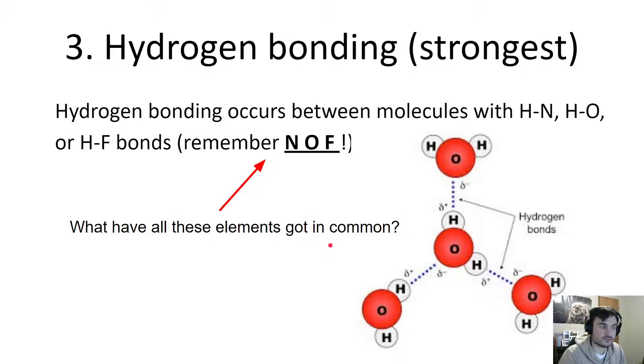What have all these elements got in common? These are the three most electronegative elements on the periodic table. And you may be thinking, what about chlorine? Chlorine is pretty electronegative, and nitrogen is not particularly electronegative.